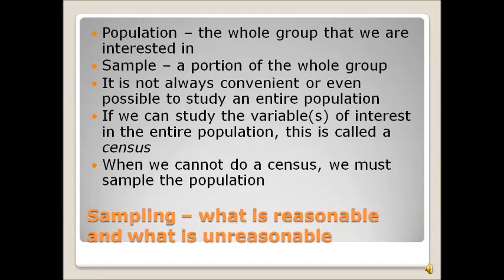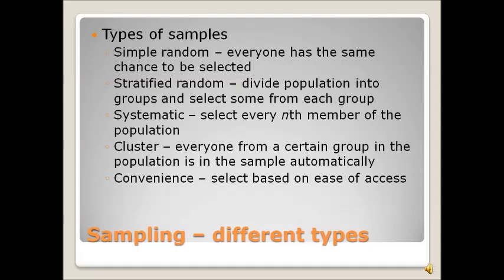And that's exactly what the US census does. And by law, they have to get to everybody. That's why if you don't return your census form, they start calling you. When we can't do a census, either because it is inconvenient or because it's too expensive or just because it's impossible, we have to sample the population. So sampling is done when it is unreasonable to do a census of a population. Now, there's many different types of sampling.